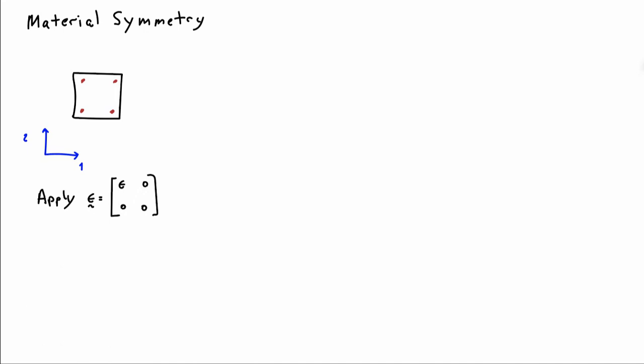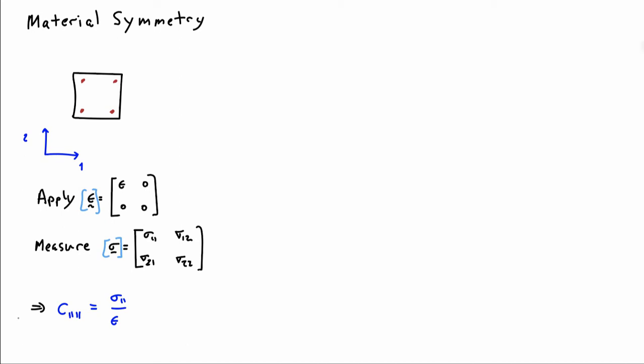Let me consider the experiment where I apply a strain in the one direction. This is the matrix of strain components in the 1, 2 basis that I've set up. I can go ahead and measure the stresses — the matrix of stress components in the 1, 2 basis. For example, if I take the ratio of sigma 1,1 to epsilon, that will be C1,1,1,1 in this coordinate basis. Everything is in my original coordinate basis, E1, E2.